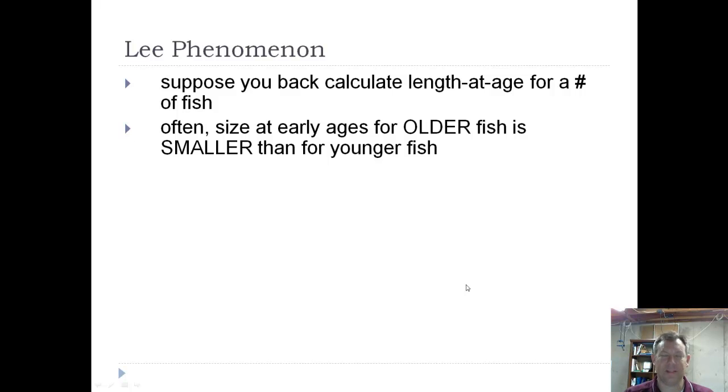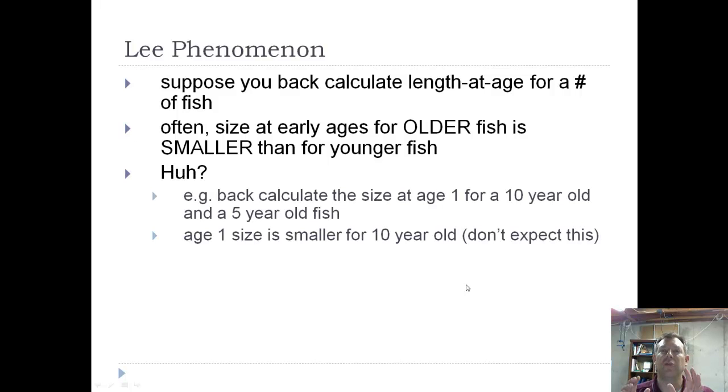Now, that sounds confusing. Imagine that you've got a sample, and in that sample there's a ten-year-old fish and a five-year-old fish. And you back calculate length at age for each of those fish. So you know how big each fish was at age one. And what you'll find out is that more often than not, that ten-year-old fish was smaller at age one than the five-year-old fish. And that ten-year-old fish was smaller at age two than that five-year-old fish. That's the Lee phenomenon.